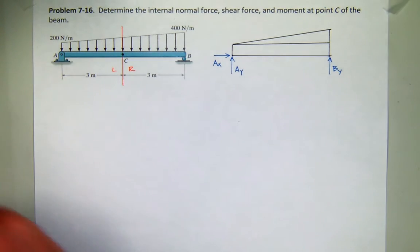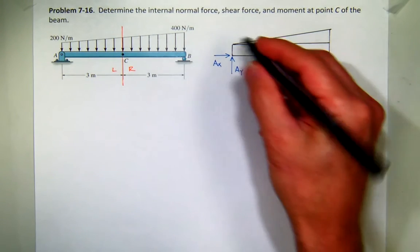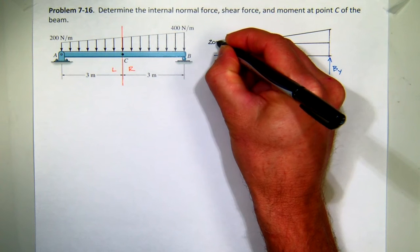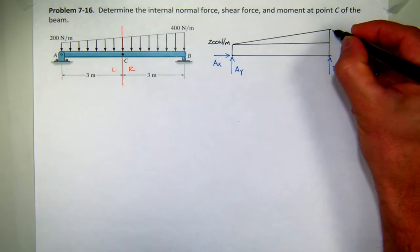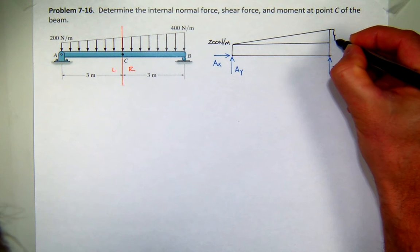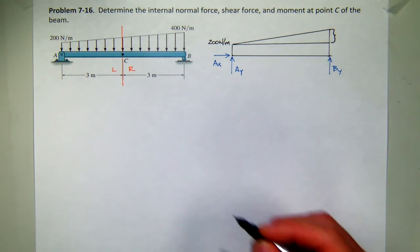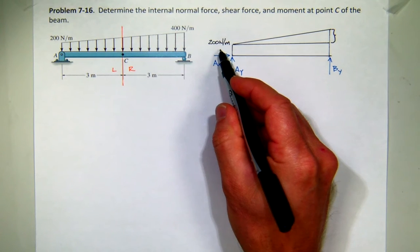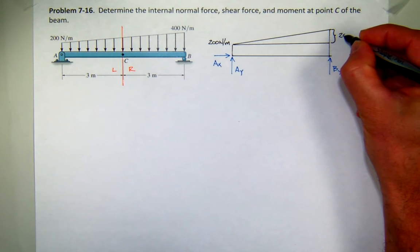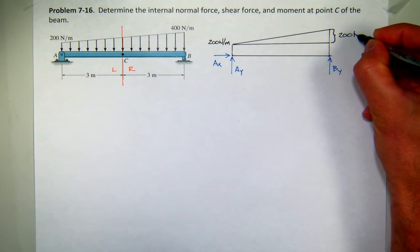So my rectangular piece here has an intensity of 200 newtons per meter. And what would be the height of the triangle? 400 minus 200. So that little section is also 200 newtons per meter.